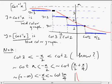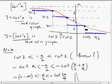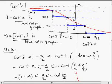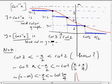After plotting the horizontal integer lines, we mark the points of intersection between the cot⁻¹x graph and these lines. For example, the intersection of cot⁻¹x with y=1 gives x = cot1. Similarly, solving cot⁻¹x = 2 gives x = cot2, and cot⁻¹x = 3 gives x = cot3.